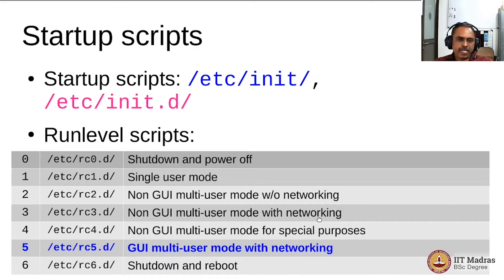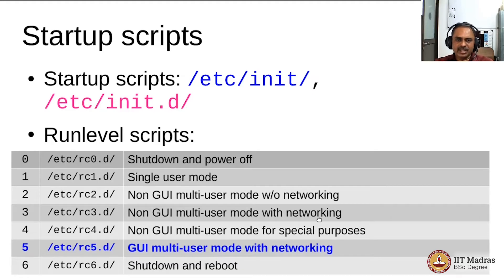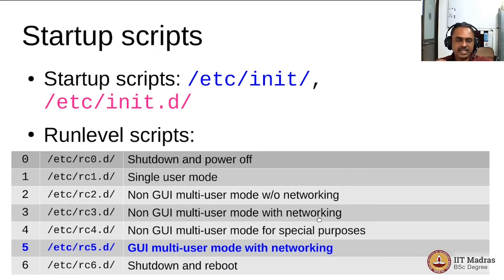There are also certain scripts that run as per the run level chosen. A Linux machine, though meant for GUI multi-user operation, can also be made to run in other modes like single-user mode for debugging and fixing errors. There are seven different modes possible, and at each mode the Linux system will perform certain actions. What scripts it should run will be listed in the directory /etc/rc followed by the run level number and .d.